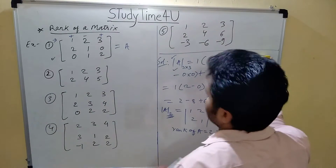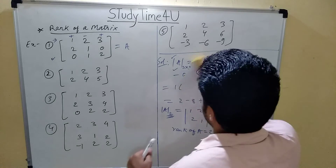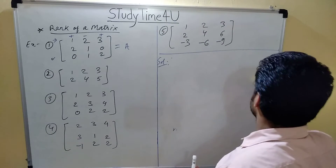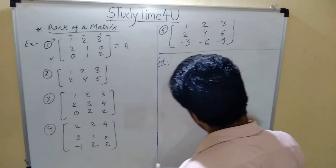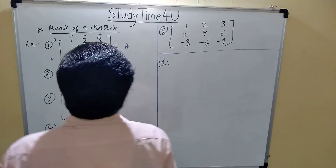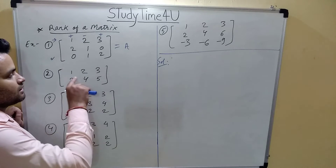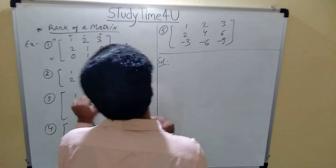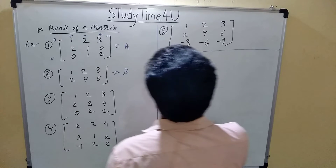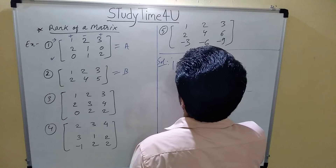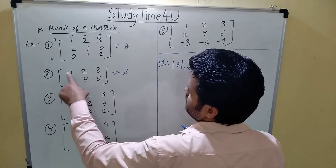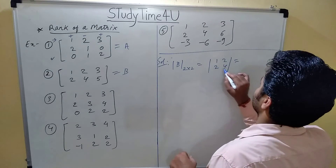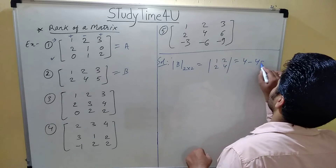Now we solve the second question. This matrix has 2 rows and 3 columns. The determinant is only defined for a square matrix, so this is not a square matrix. We consider 2 rows and 2 columns, calling this matrix B. Taking the 2×2 submatrix with entries 1, 2, 2, 4 and solving: 1 into 4 = 4, minus 2 into 2 = 4. We are getting 0.